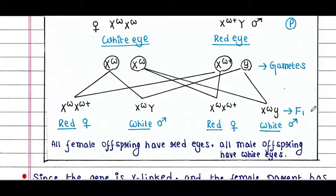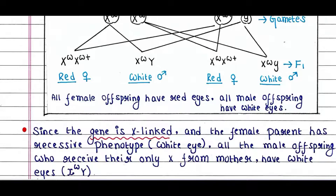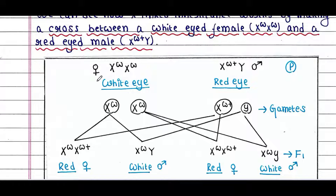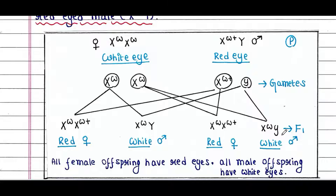When we cross them, in the F1 generation we get four different types of offspring. All female offspring have red eyes, and all male offspring have white eyes. Since the gene is X-linked and the female parent has the recessive phenotype (white eyes), all male offspring who receive their only X chromosome from the mother have white eyes.